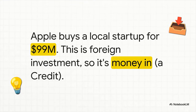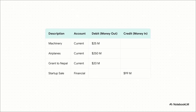Here's the deal: a big foreign company, let's say Apple, buys a local startup for $99 million. A foreign company is sending its cash into our economy to buy an asset — the startup. This is classic foreign investment. And because money is coming in, it's a credit. And since it's an investment, it goes into the financial account. Now we've got action on both sides of the sheet — three debits in the current account for goods and aid, and one big credit in the financial account for that investment. The full picture is starting to come together.